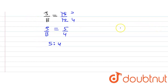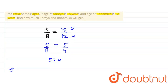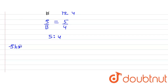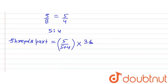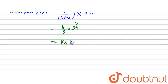The amount is divided in the ratio of their ages. To find Shreya's part, that will be equal to 5 divided by the total — that is 5 plus 4 — multiplied by the amount of 36. So Shreya will get 5 divided by 9 of the total amount. Solving further: 5 divided by 9 multiplied by 36. This 36 divides by 9 to give 4, and 5 multiplied by 4 gives us 20. So Shreya will get 20 rupees.